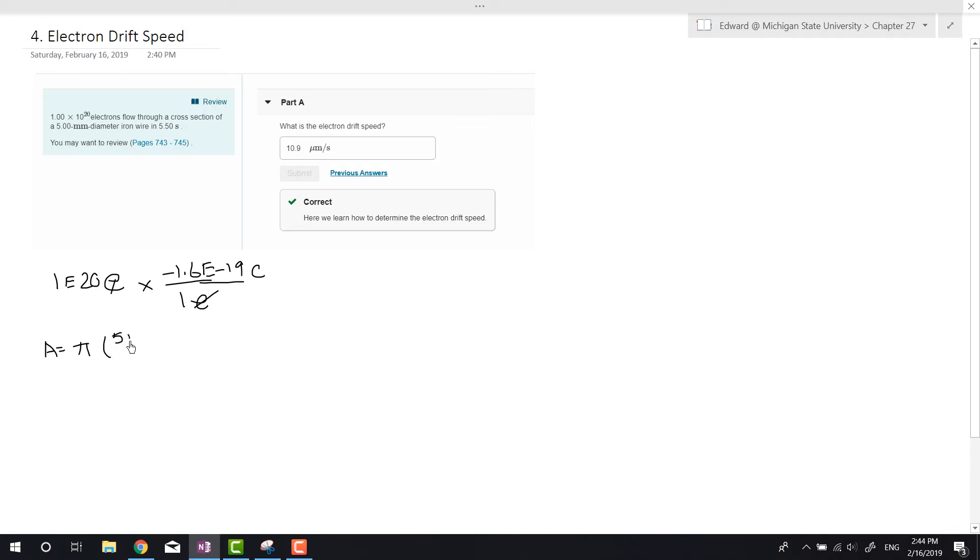That's just going to be 5 e to the minus 3, divided by 2 and squared, times pi. We get 1.963 e to the negative 5 meters squared.